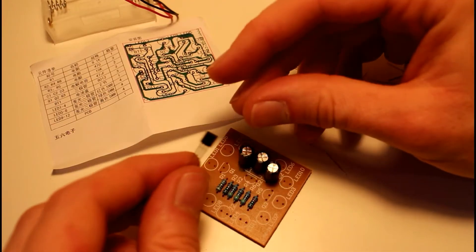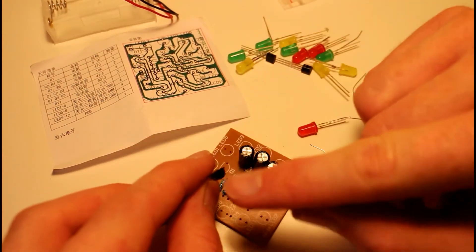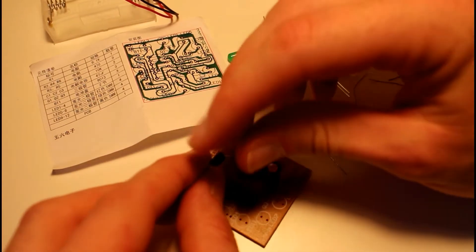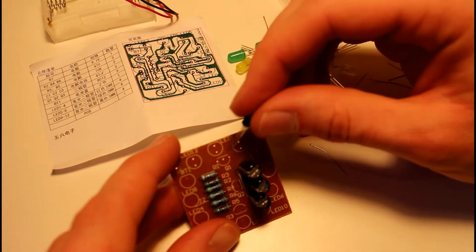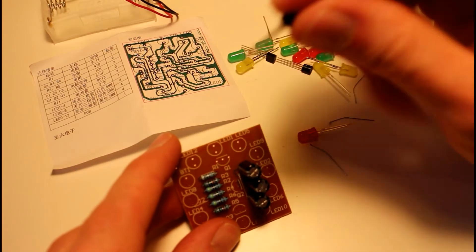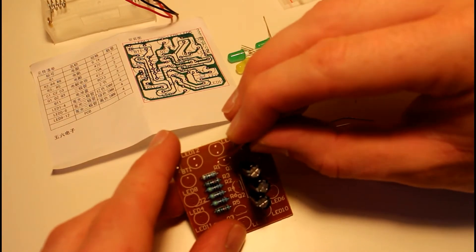Next on the list is the transistors, and we can tell how they are positioned on the board by the shape of the case. You can see it's kind of like a capital D shape. If we look at the board, we also have a capital D shape drawn in the silkscreen here. So all we need to do is line up the transistor so that it matches the silkscreen.